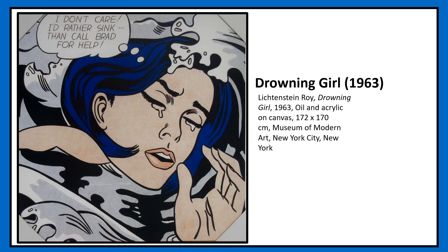To start, Drowning Girl, made in 1963, is a painting that depicts a woman struggling against the chaotic waves that surround her with a look of despair on her face. Accompanying her is a thought bubble — a staple for showing internal thoughts in comics — with the dialogue: "I do not care, I'd rather sink than call Brad for help," implying there was something going on between the two that is not shown to the viewer.